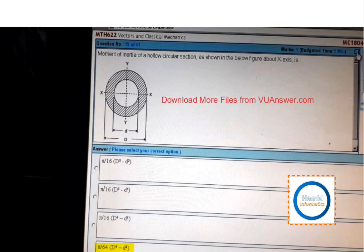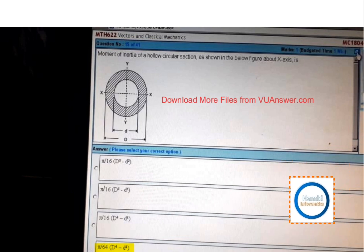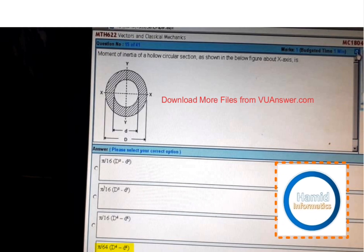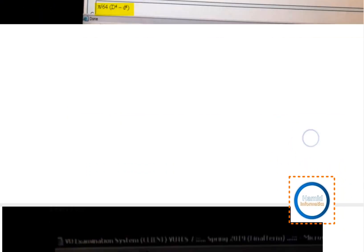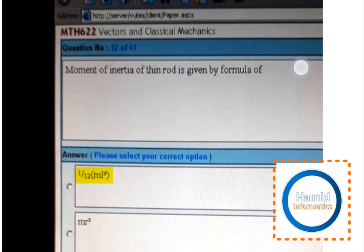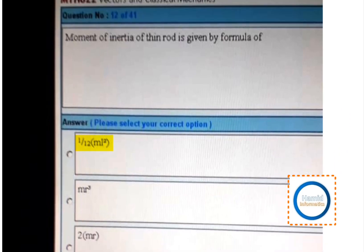Next, moment of inertia of a hollow circular section about x-axis is shown in the below figure, and the answer is pi by 64 into D4 minus d4, where D is diameter of the big hole and d is for the small hole. Moment of inertia of thin rod is given by the formula one over 12 ml square.